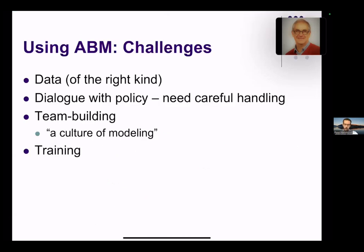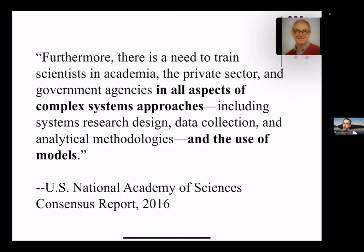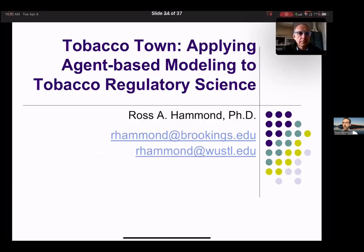In the last couple of minutes before I stop for questions, I just want to say this kind of work is very challenging. Getting the right kind of data can be challenging. The dialogue with policymakers, which I've described as very successful, certainly can be, but needs a lot of careful handling and planning to go well. There's a dearth of training in the US in agent-based modeling and how to do policy-oriented agent-based modeling. I'll leave you with a quote from the National Academy of Sciences arguing that not only should everyone in academia learn this kind of modeling, but the private sector and government agencies as well.